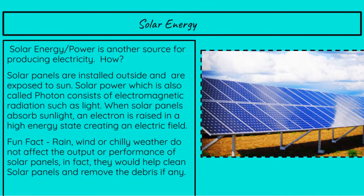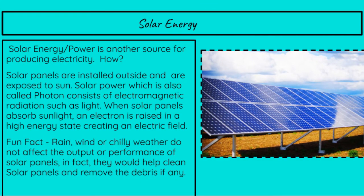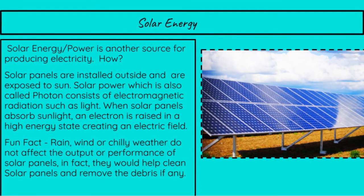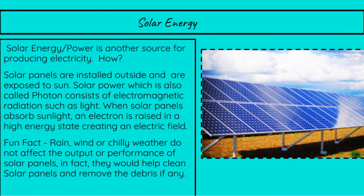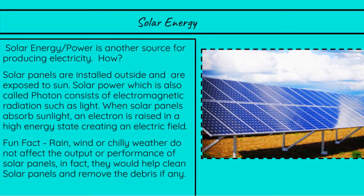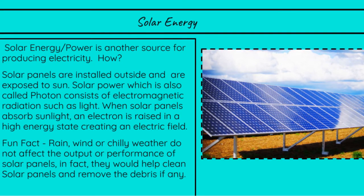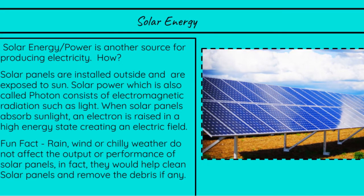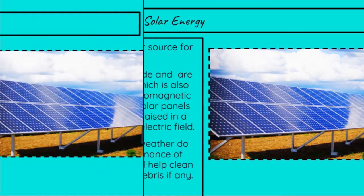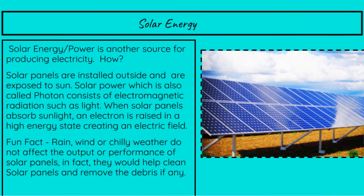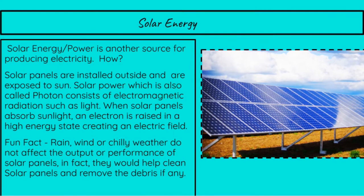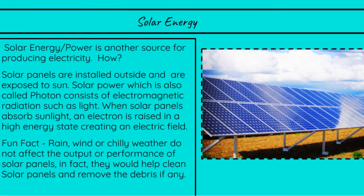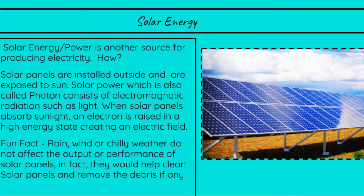Solar energy is another source for producing electricity. Solar panels are installed outside and are exposed to sun. Solar power, which is also called photon, consists of electromagnetic radiation, such as light. When solar panels absorb sunlight, an electron is raised in a high-energy state, creating an electric field. Another fun fact: rain, wind, or chilly weather do not impact the performance of solar panels. In fact, they would keep solar panels clean and remove any debris.